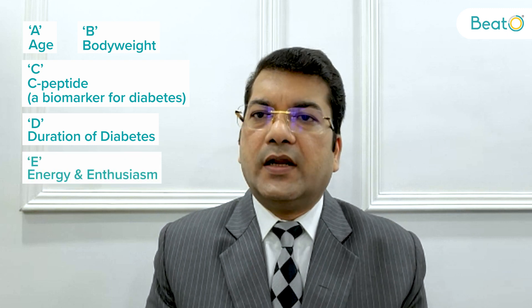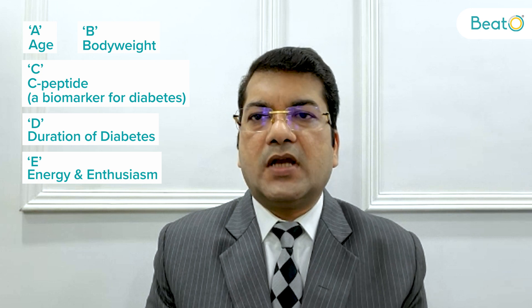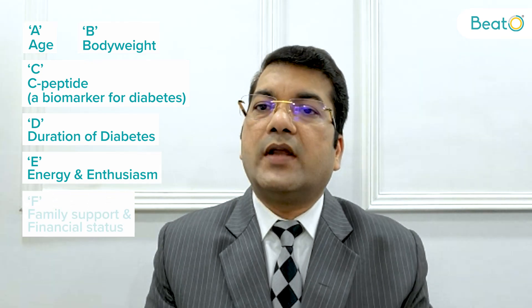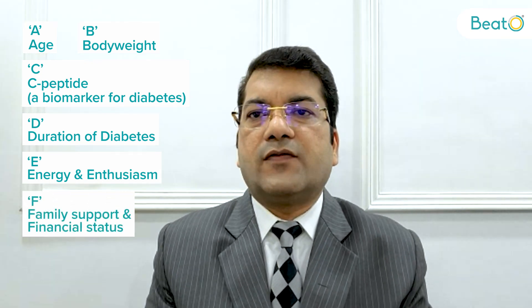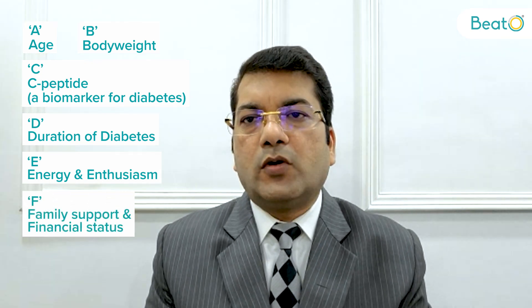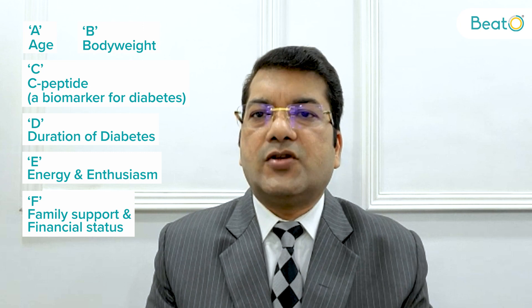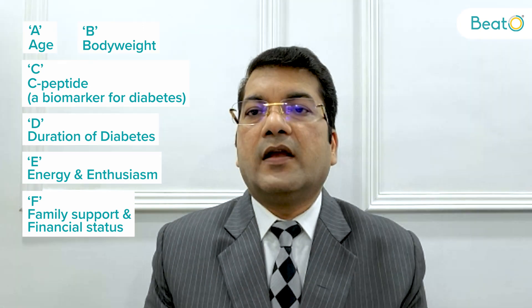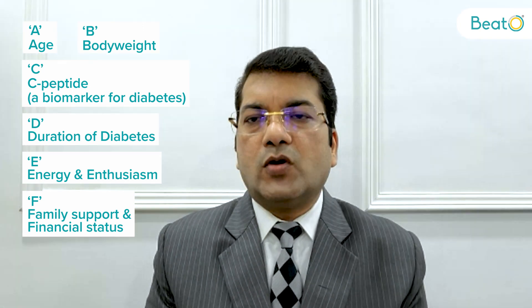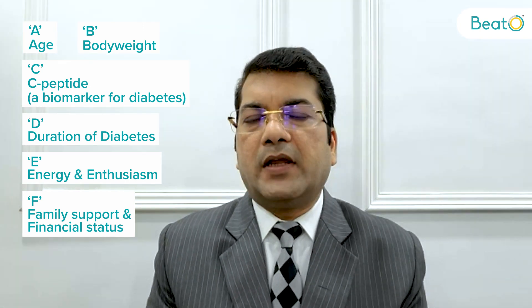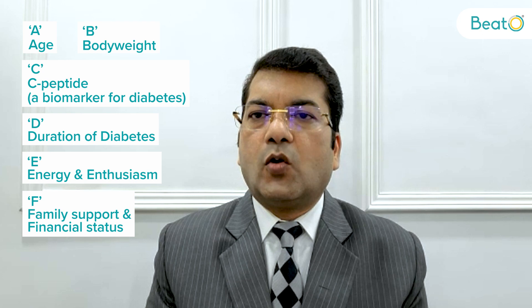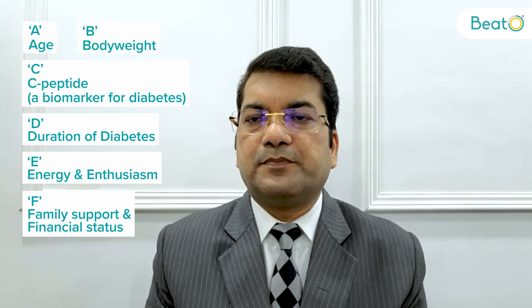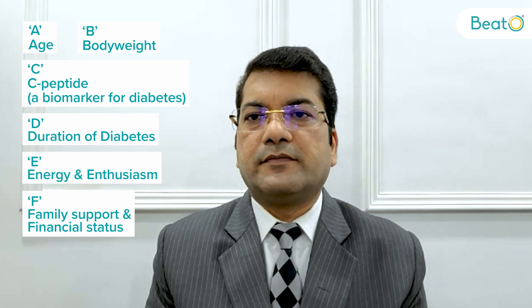E stands for energy and enthusiasm of the patient. F stands for the family support and financial support of the patient. So if the patient has good support of the family, the patient can go into remission of type 2 diabetes.